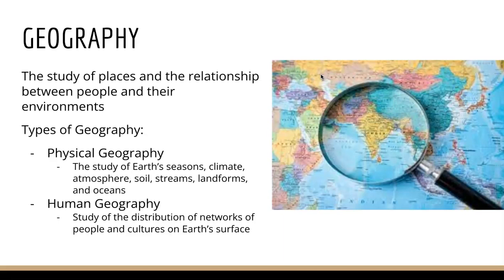So what is geography? It is a study of places and the relationship between people and their community. There are two types of geography. Physical geography, which is a study of Earth's seasons, climate, atmospheres, and landforms and oceans. And there's also human geography, the study of distribution of networks of people and cultures on Earth's surface. For the first part of this lecture, we'll be focusing on human geography.